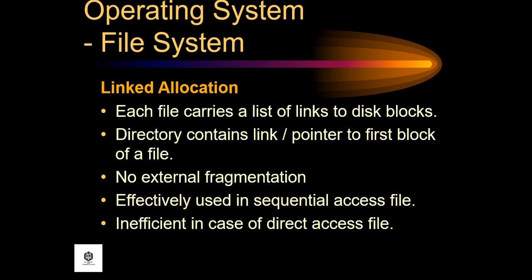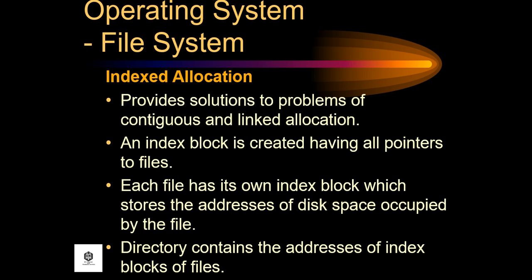Next is link allocation, wherein each file carries a list of links to disk blocks and the directory contains a link or pointer to the first block of a file. There is no external fragmentation, and it is effective for sequential access, but inefficient in the case of direct access.